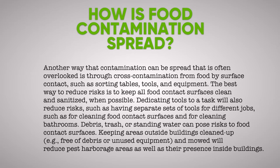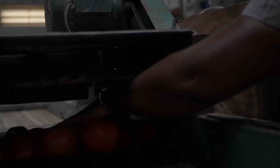Dedicating tools to a task will also reduce risk, such as having separate sets of tools for different jobs — for example, for cleaning food contact surfaces and for cleaning bathrooms. Debris, trash, or standing water can pose risk to food contact surfaces. Keeping areas outside buildings clean, free of debris or unused equipment, and free of any overgrown areas will reduce pest harborage areas as well as their presence inside buildings. More details about reducing risk posed by buildings, equipment, and tools will be covered in Unit 6, Produce Quality Management.